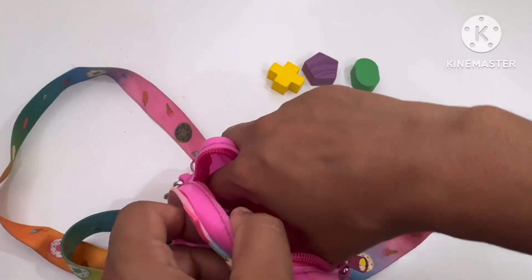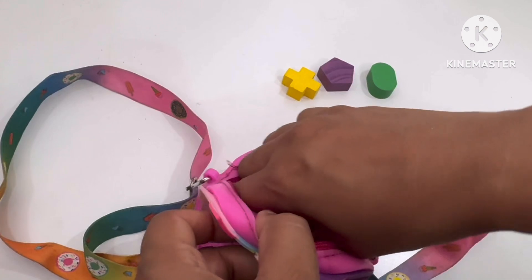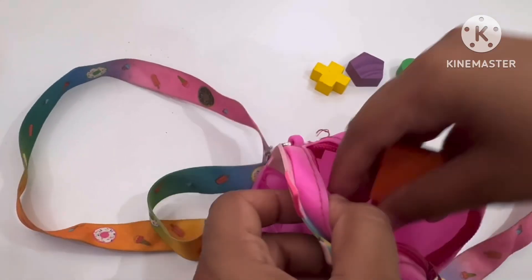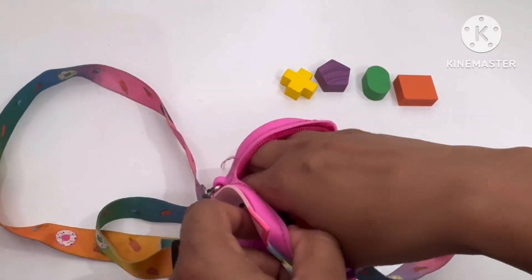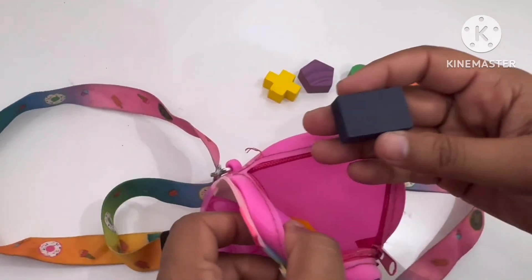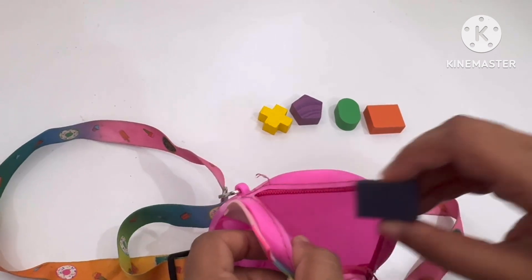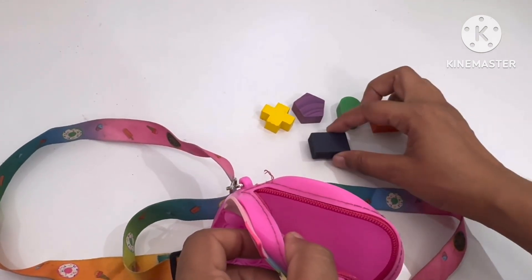Let's see what other shapes we have. Oh! It is a rectangle, circle. Sorry! This is a square and this is a rectangle.